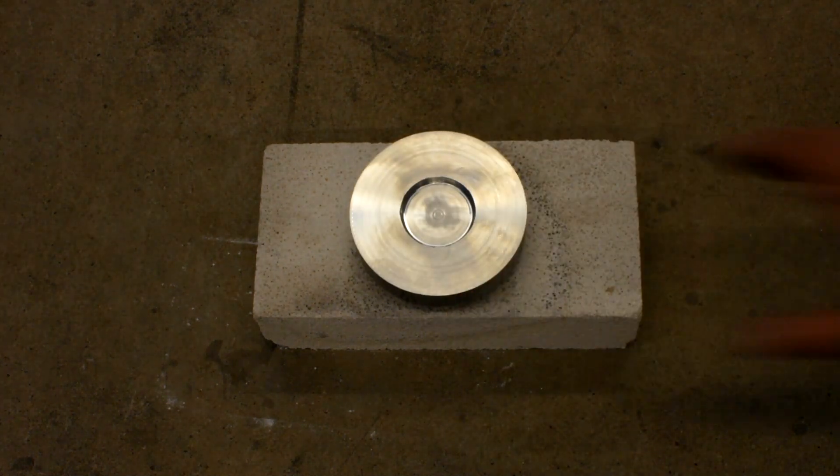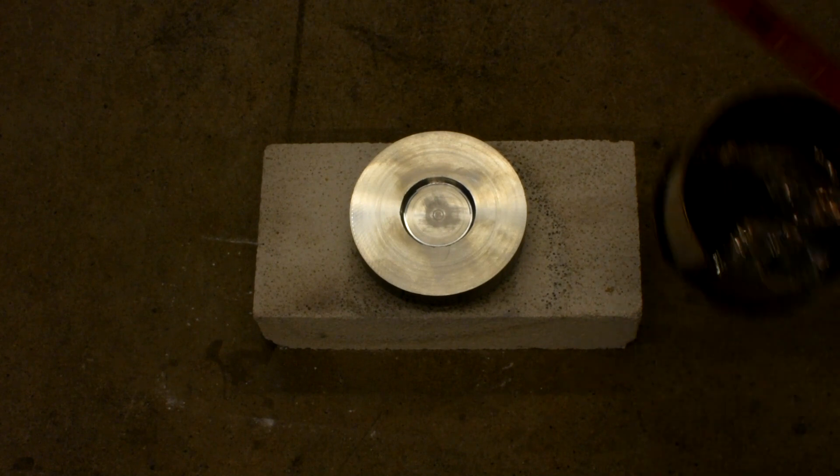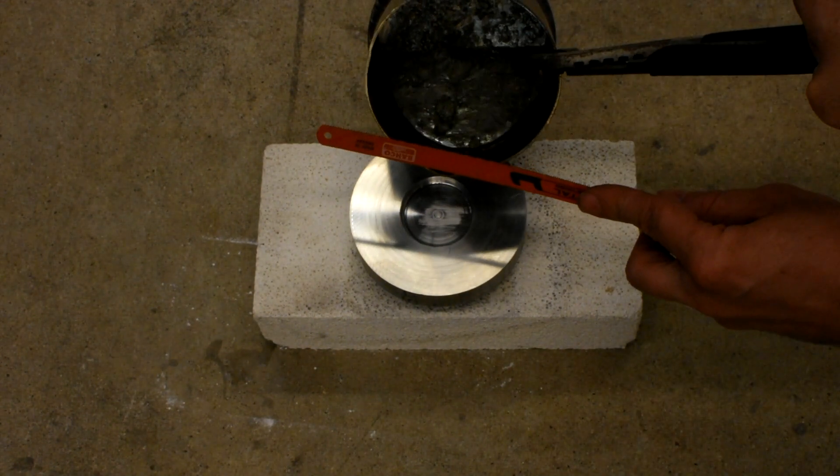Now we're going to cast some bismuth into this aluminum mold. We use a hacksaw blade to help separate the slag layer as we're pouring the molten bismuth into the mold.